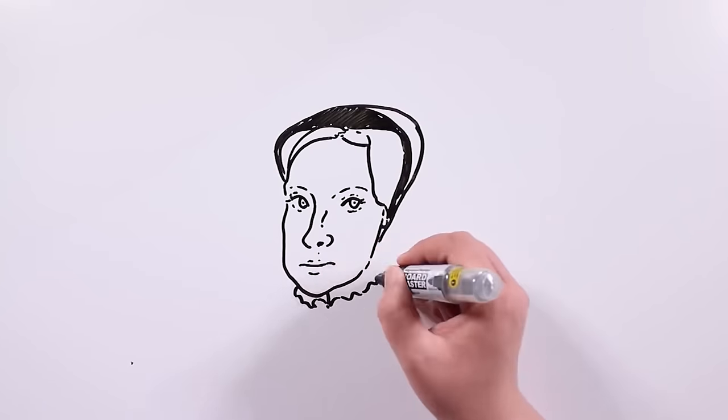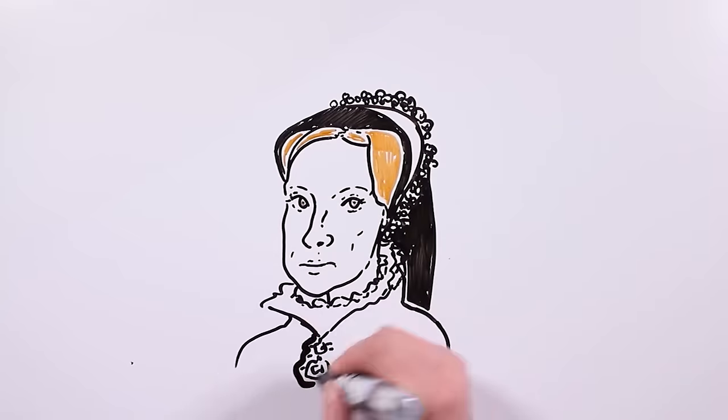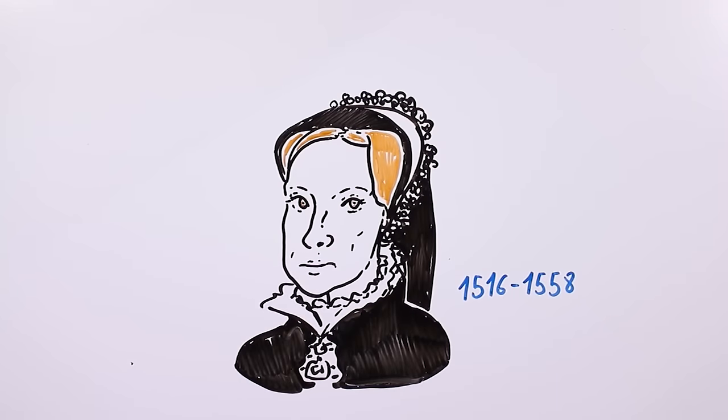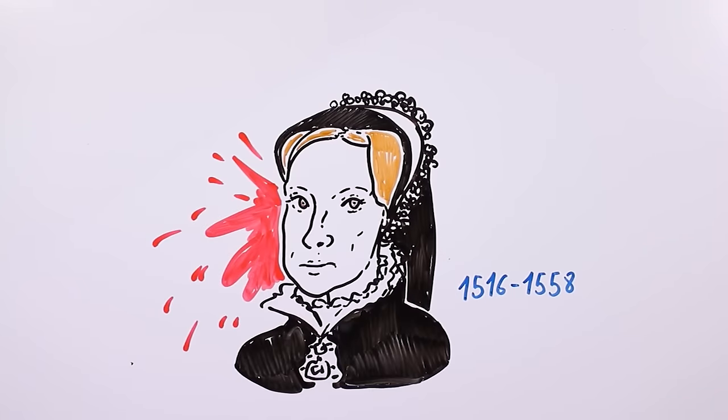She was even linked to Queen Mary Tudor of England, nicknamed Bloody Mary for the numerous executions she carried out during her tenure.